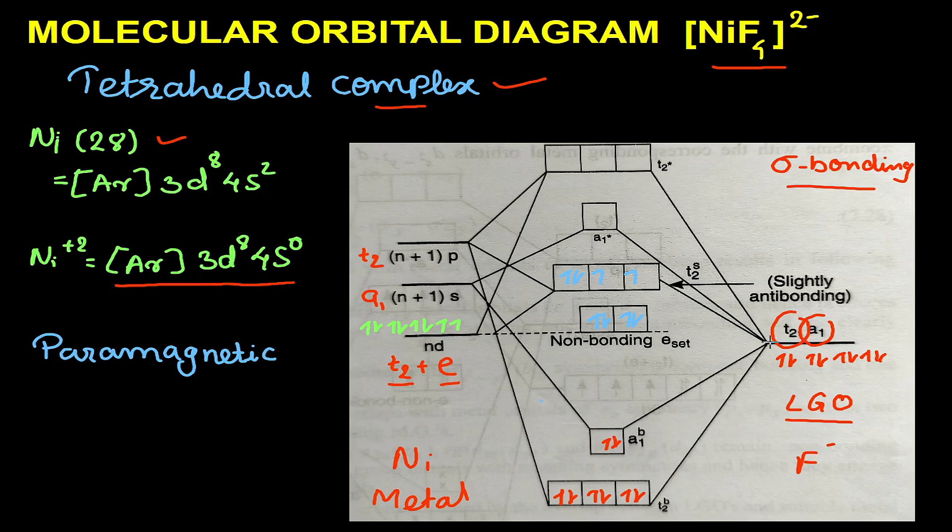The second orbital is t₂. The metal has two t₂ orbitals: 3d t₂ and 4p t₂. These t₂ orbitals will combine to give us a bonding t₂ orbital, a partially antibonding t₂ orbital, and a completely antibonding t₂ orbital. So we will have three orbitals. The remaining e orbital will form a non-bonding orbital.